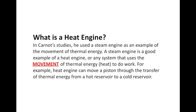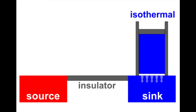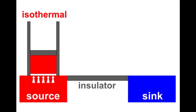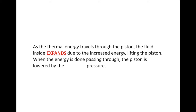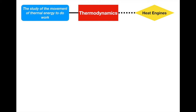In our example, we're going to talk about a really simple heat engine — one that moves a piston through the transfer of thermal energy between a hot reservoir and a cold reservoir. If you warm up the gas inside the piston it expands, and when you move it to the cold source the heat gets transferred to the heat sink, which allows it to compress again. As thermal energy travels through the piston, the fluid expands due to increased energy and lifts the piston upward. When the energy is transferred to the cold reservoir, the piston is lowered by reduced pressure. Heat engines are devices that use the transfer of thermal energy in order to do work.